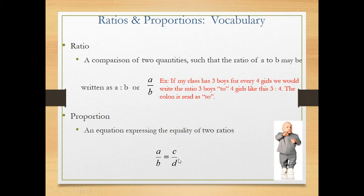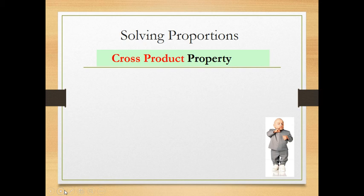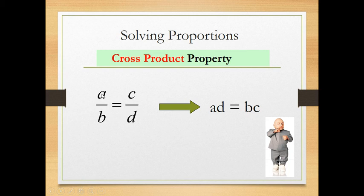We can solve proportions by cross-multiplying, what we call the cross-product property. Consider the proportion a/b = c/d, where a, b, c, and d can represent any real numbers or variables. All we do is cross-multiply: we multiply a times d and set that equal to b times c — we set their cross-products equal.